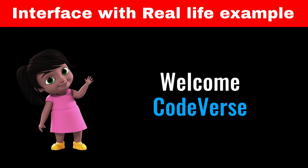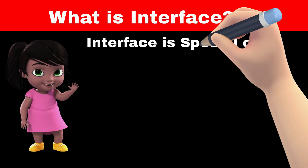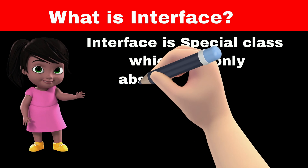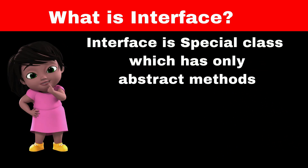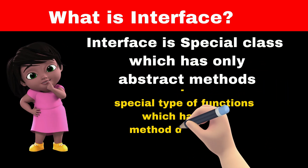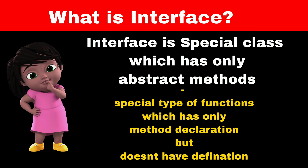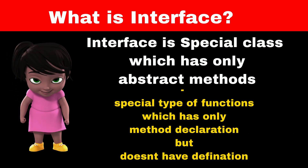Can you explain interface with a real life example? Interface is a special type of class in Java that has only abstract methods. An abstract method is a method that has only method declaration but doesn't have the method definition or method body. So what's the use of such a class which has only method declaration?